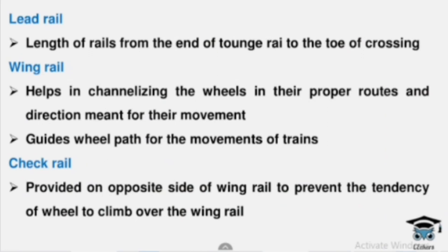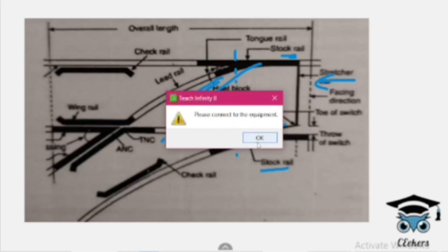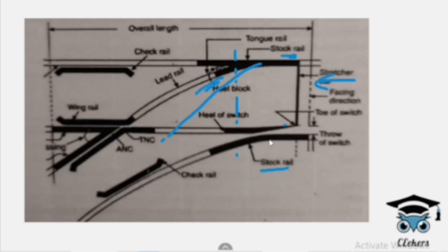What is the lead rail? The length of rail is from the end of the tongue rail to the toe of the crossing. We have to use the lead rail to lead the train by the track.